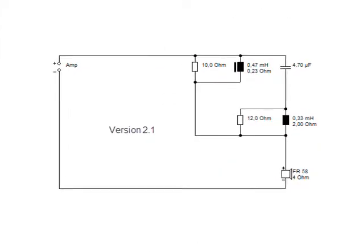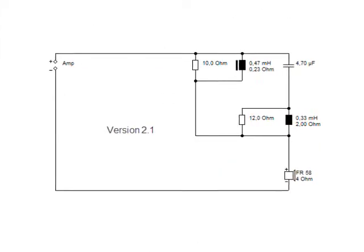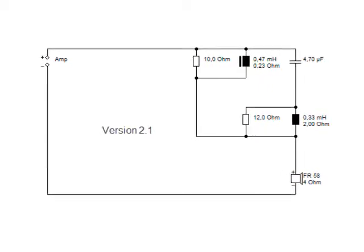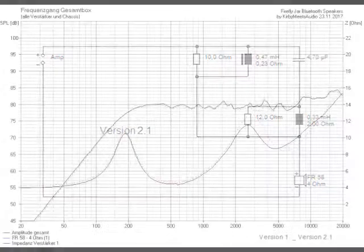A cheaper, aber ein bisschen mehr kompliziert Network – rund 21 Euro per pair in total – didn't have diese Disadvantages und nearly brought the same result.